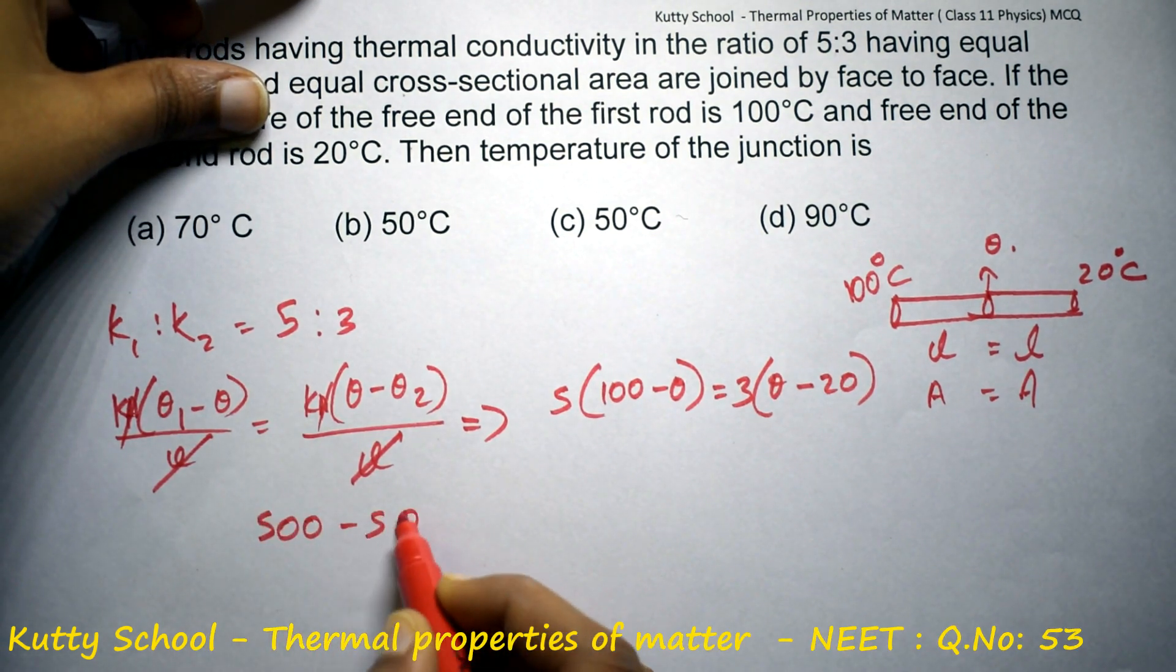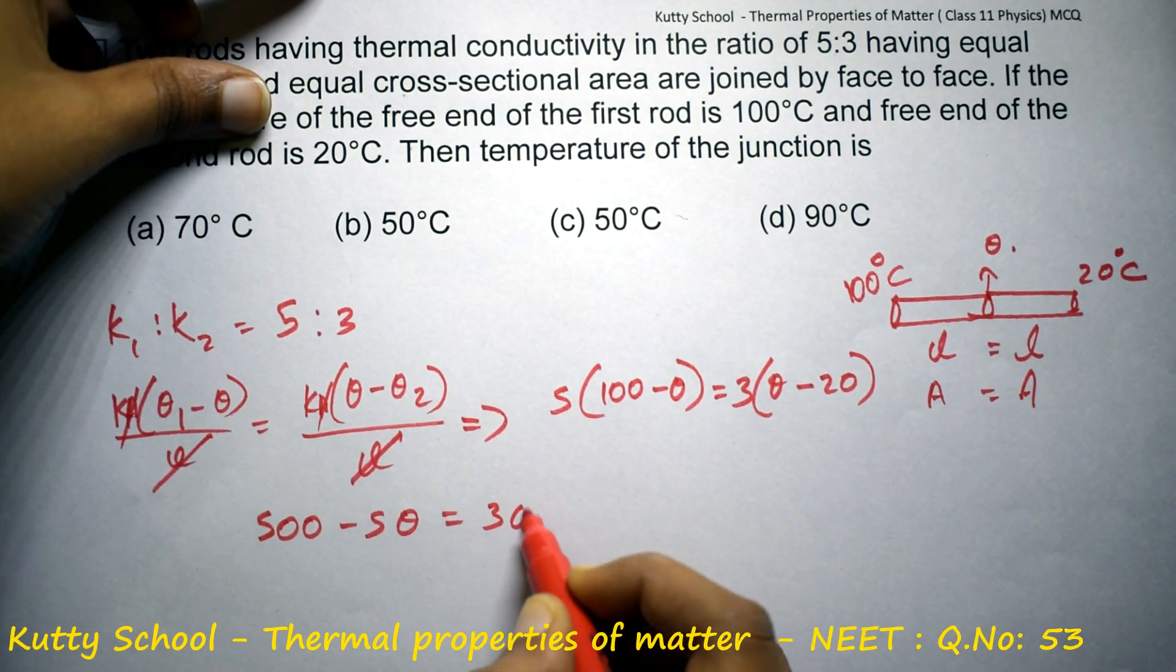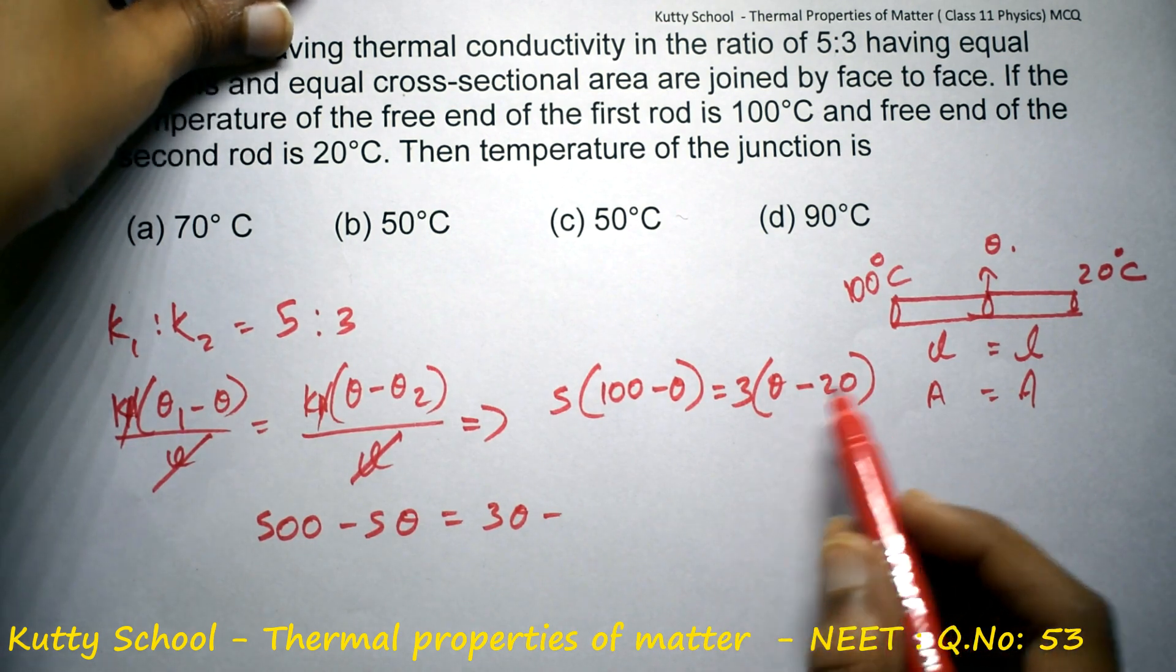This gives us 500 minus 5 theta equals 3 theta minus 60.